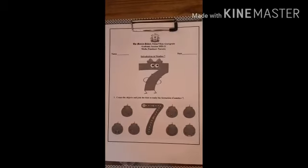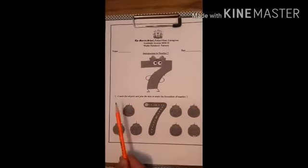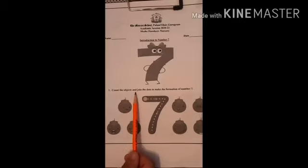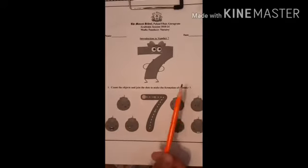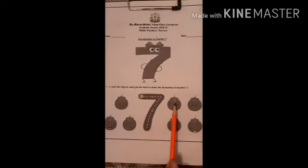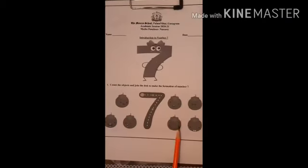Let's do the fun sheet together. The first question says, count the objects and join the dots to make the formation of number 7. 1, 2, 3, 4, 5, 6 and 7.